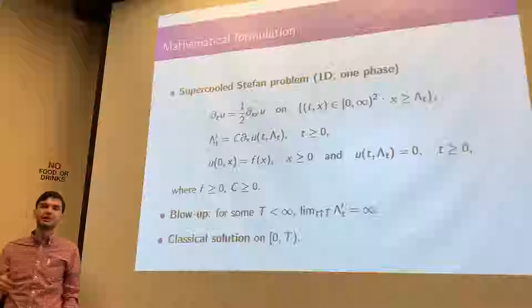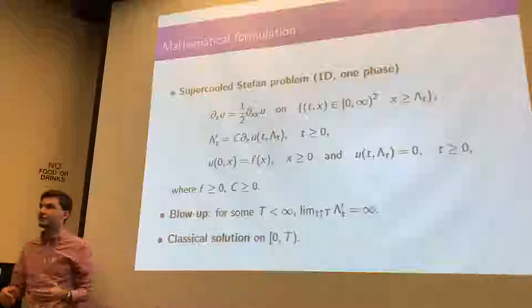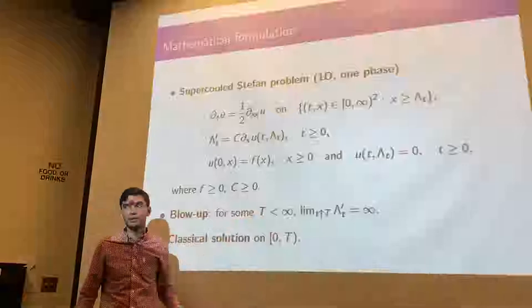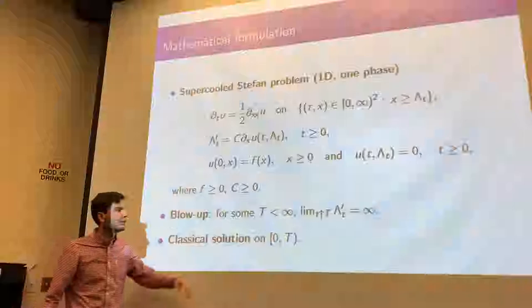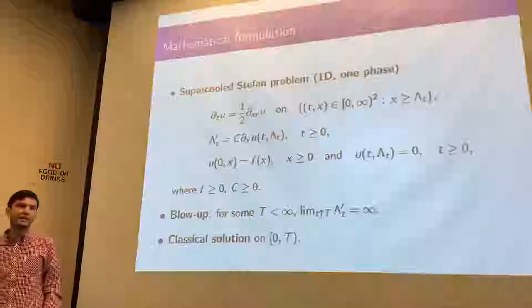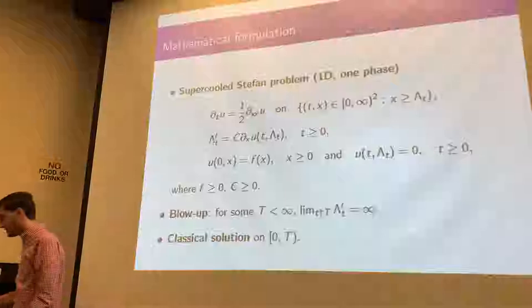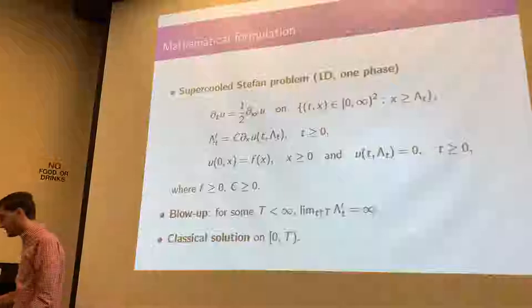What is known about this problem, as I mentioned, is that it has blowups. No matter how nice your initial condition is, there will be situations — you can find perfectly smooth initial conditions — where at some finite time T the velocity of your boundary, the rate at which the ice grows, will blow up as you approach that time. The PDE people will tell you there is a classical solution to this problem, a solution where all derivatives are continuous, only up to that time. And that's it — that was the state of the art before we started looking into this problem.